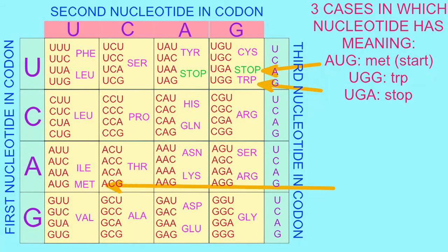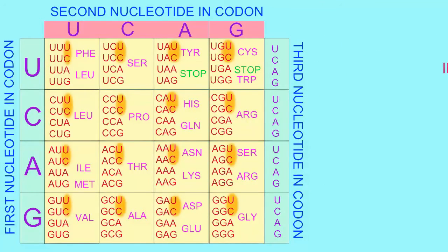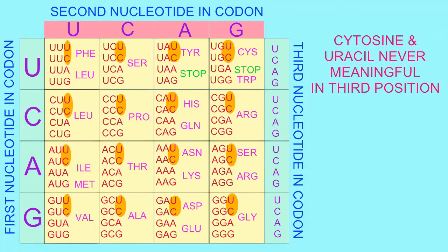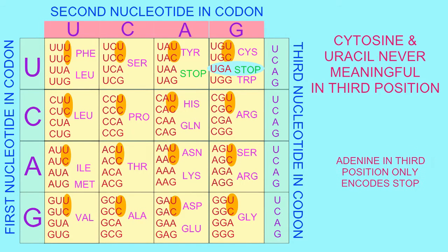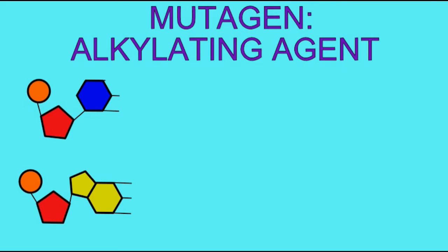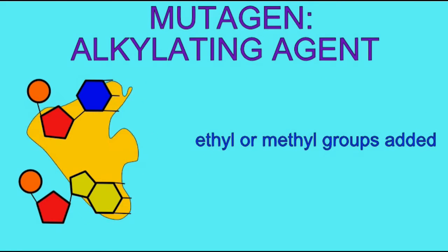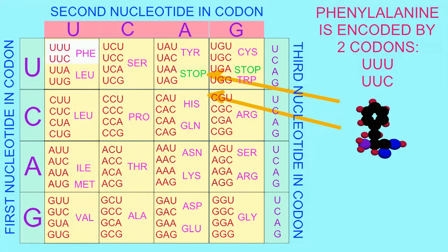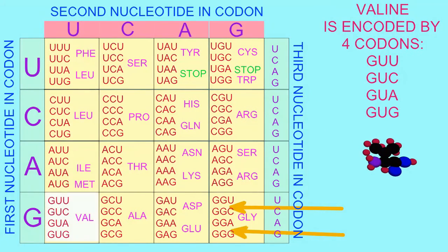Those three cases are the codons AUG, UGG, and UGA. C and U are never unique in the third position, and adenine never encodes a unique amino acid in the third position. This tendency for the same or even similar amino acids to be represented by related codons minimizes the effects of a possible mutation.